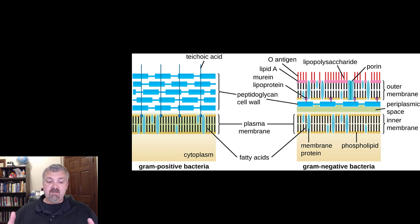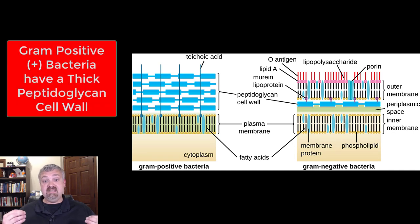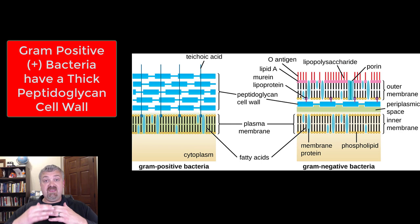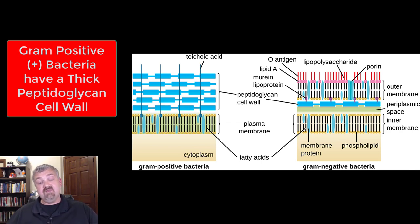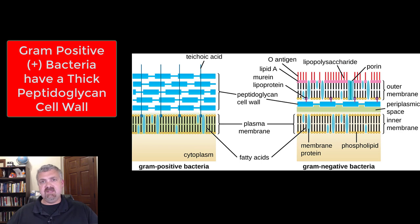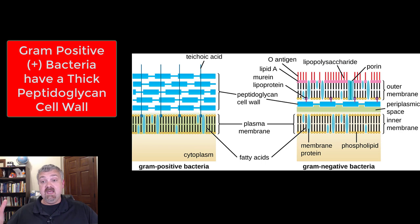Starting with gram-positive bacteria — their only defense outside the plasma membrane is the peptidoglycan cell wall, and it's a thick, strong one. This means gram-positive bacteria are better protected against mechanical stress. There are some very scary gram-positive bacteria, but as you'll see, gram-negative bacteria are a much bigger problem.